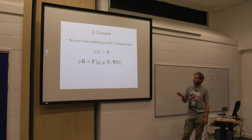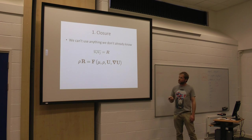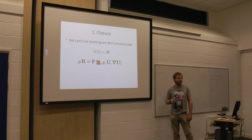So we might say R could be a function of viscosity, density, velocity, the velocity gradient. But then we actually get rid of viscosity because we say mostly when you're talking about high Reynolds number flows where turbulence is dominant, the viscosity is actually irrelevant, does nothing.